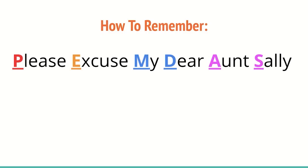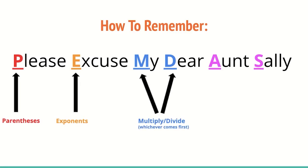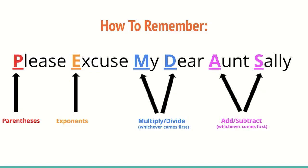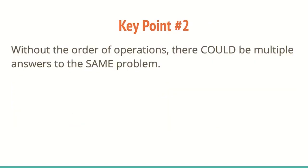One way to remember it — you may have heard this before — is 'Please Excuse My Dear Aunt Sally.' Remembering that phrase helps you remember the steps: P for parentheses, E for exponents, M and D for multiply and divide (whichever comes first), and A and S for add and subtract (whichever comes first). Without the order of operations, there could be multiple answers to the same problem, and that is exactly what we are trying to avoid.